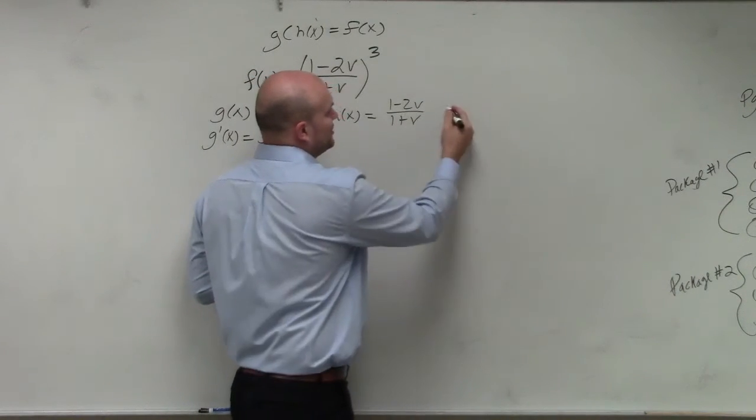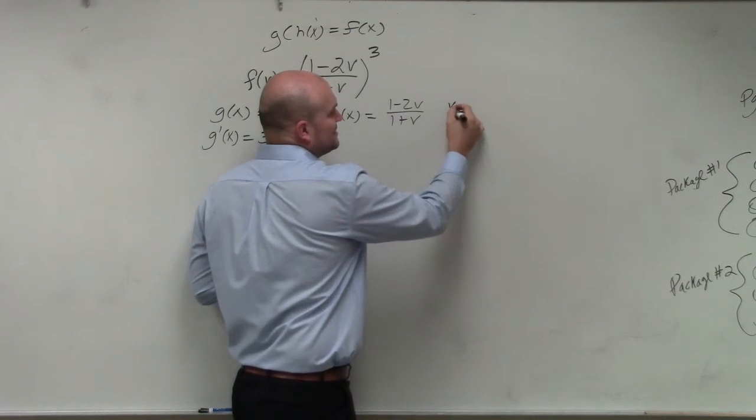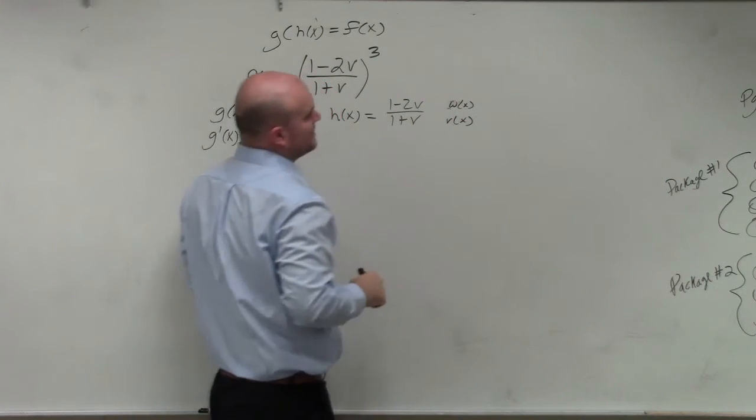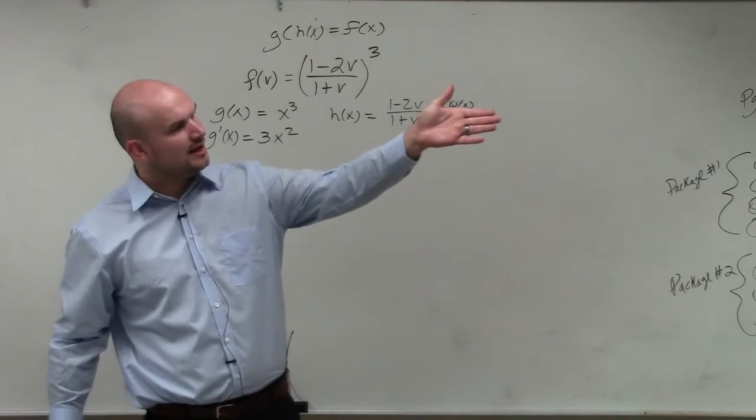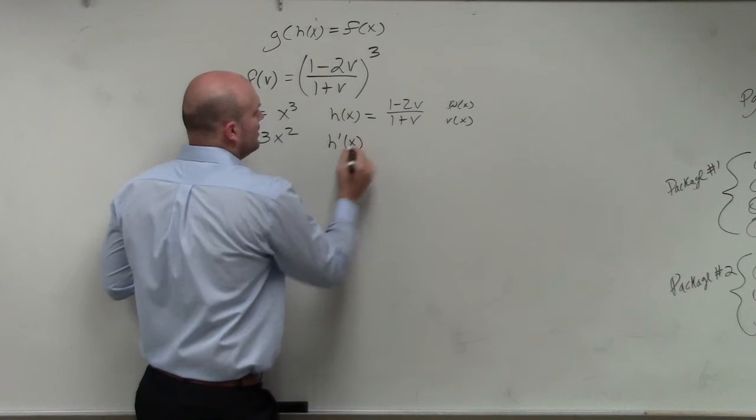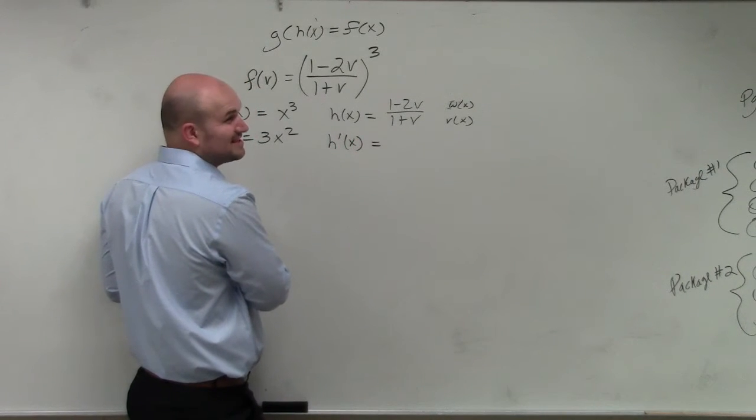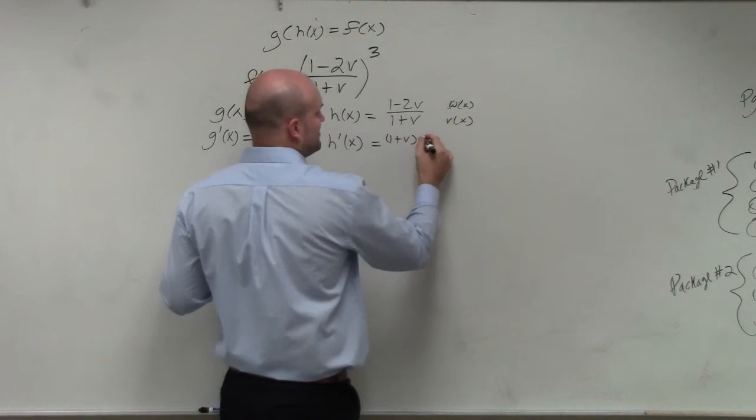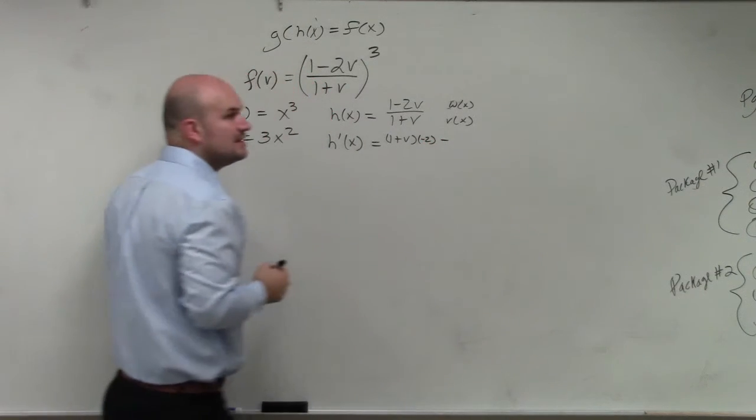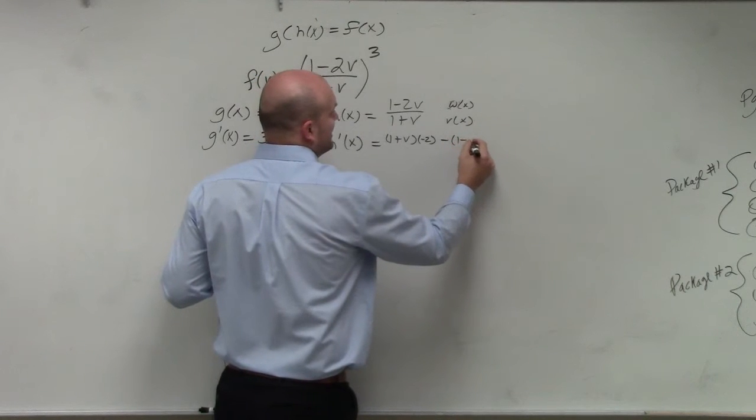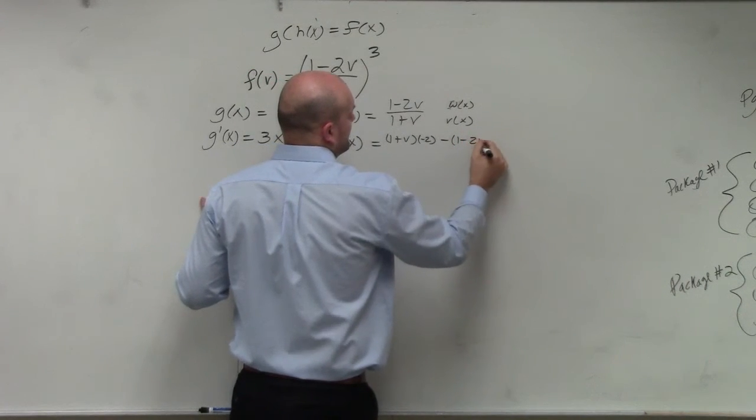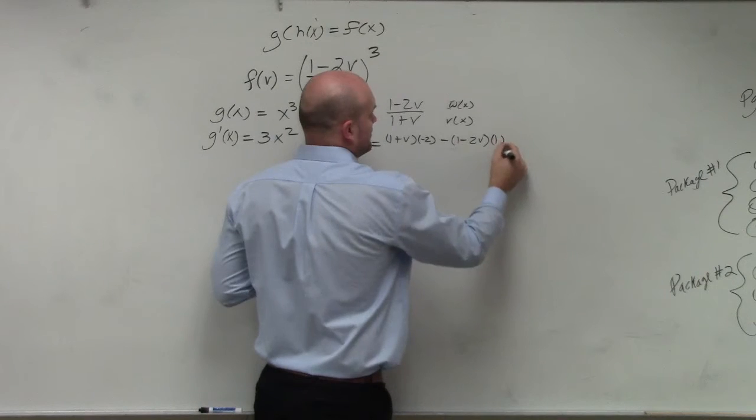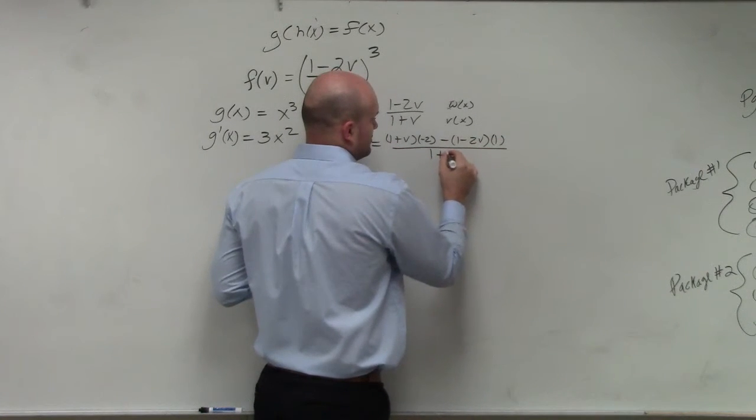So again, we could break this up into two different functions if you'd like to. Obviously, just for this case, we need to know if we said that that's like w of x and that's v of x, you can now apply the quotient rule. So h prime, which might take a little bit of work, is going to be basically the denominator, which is 1 plus v times the derivative of the numerator, which is just going to be times negative 2. And then we have minus. You have your numerator, 1 minus 2v, and then times the derivative of your denominator, which in this case is 1. And that's all over your denominator squared.